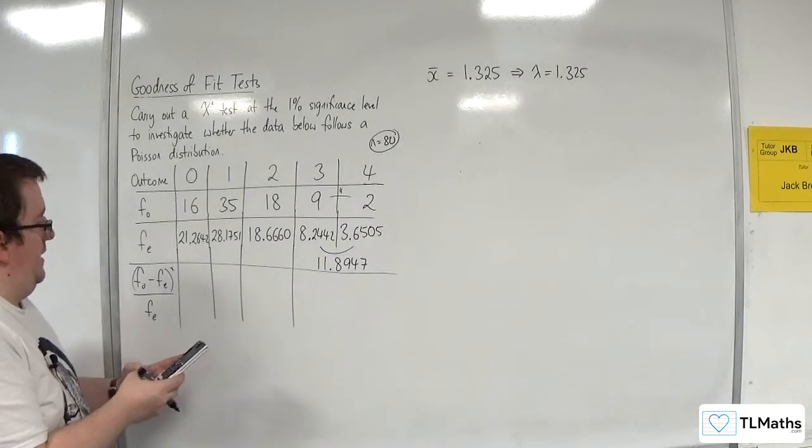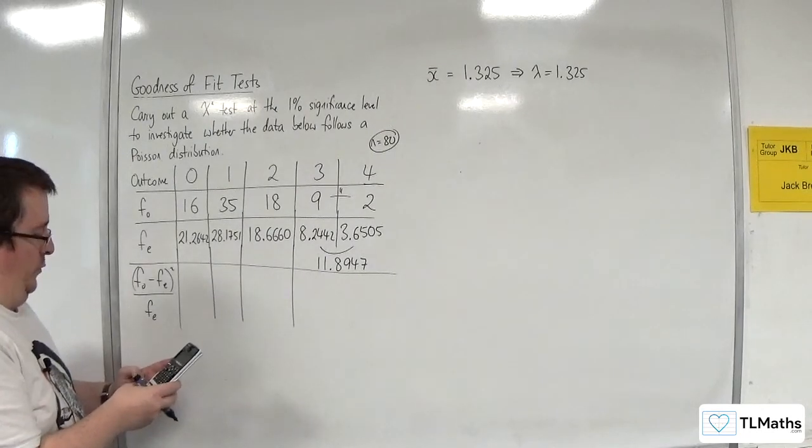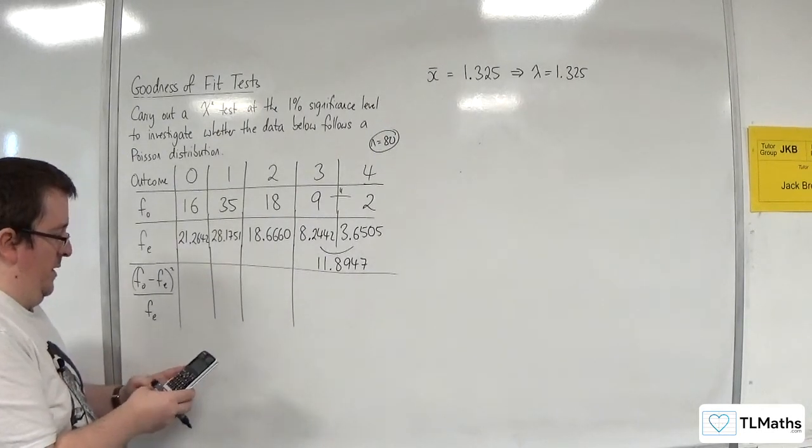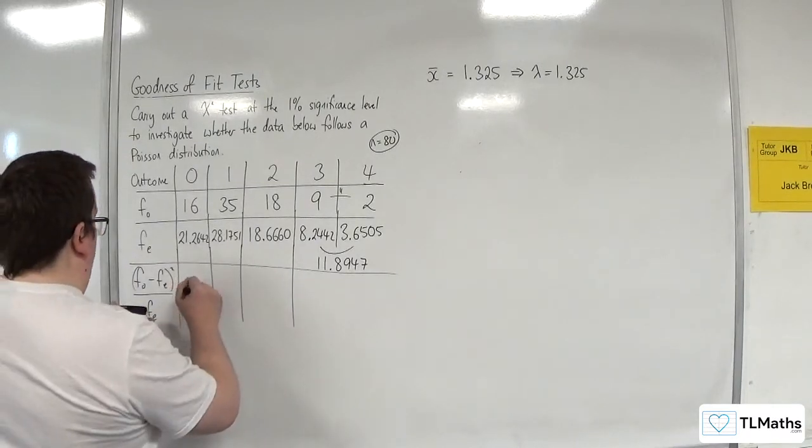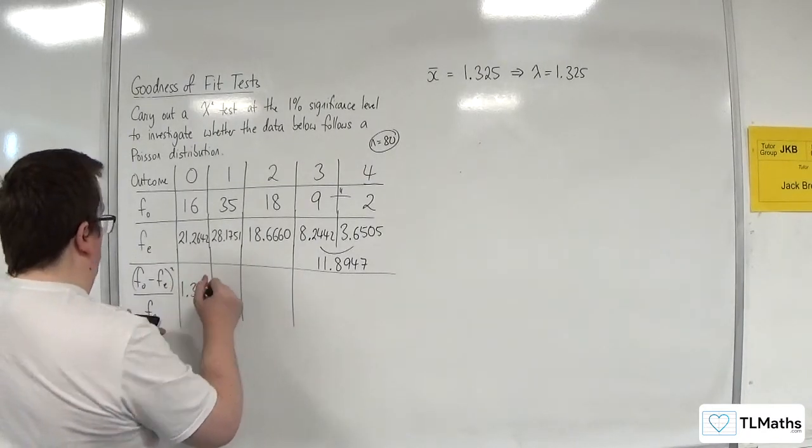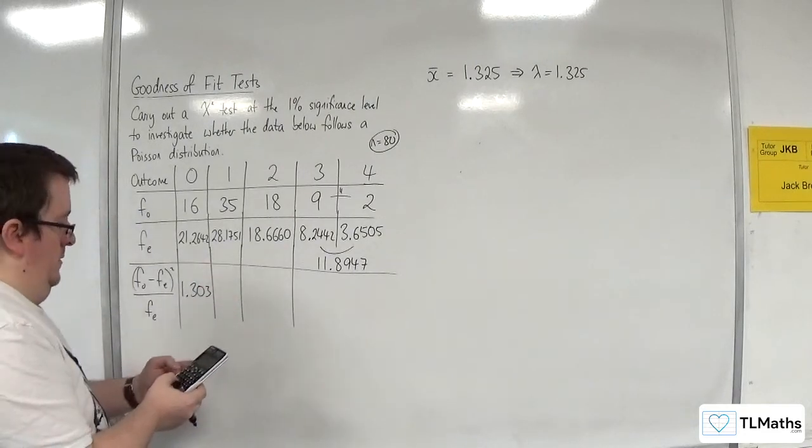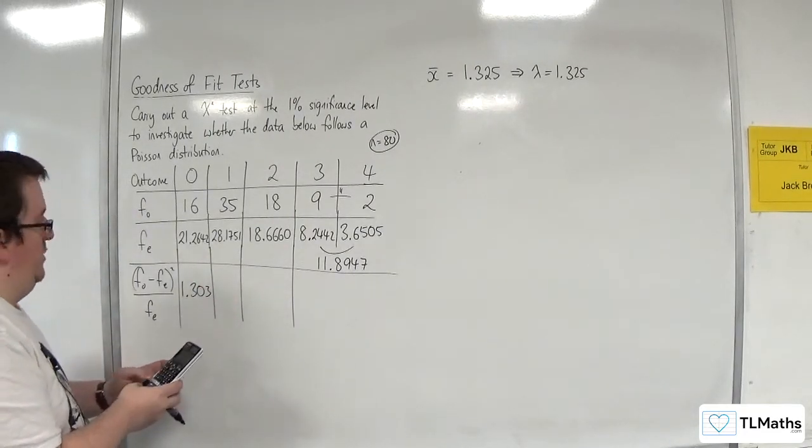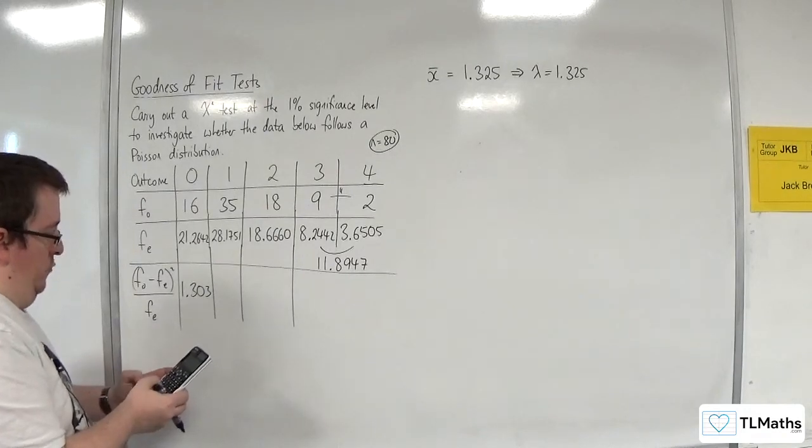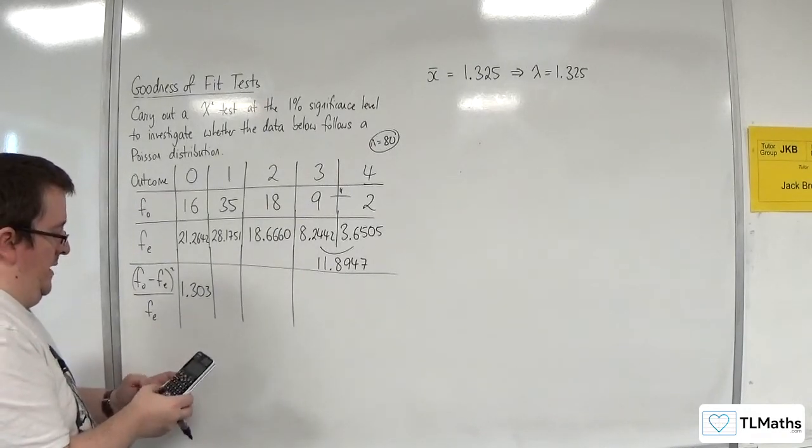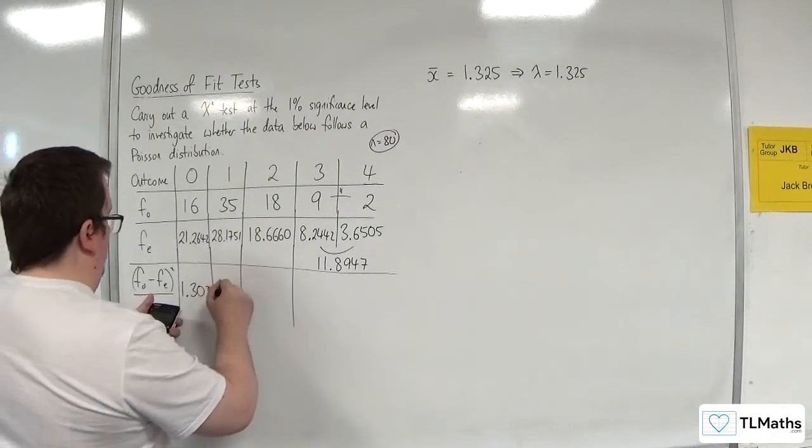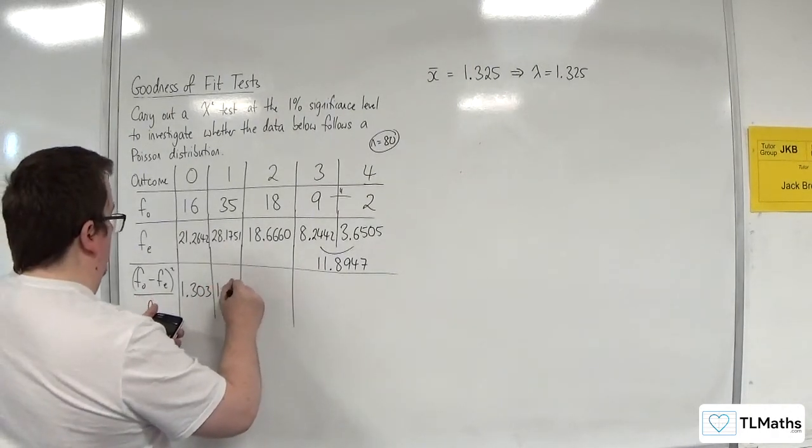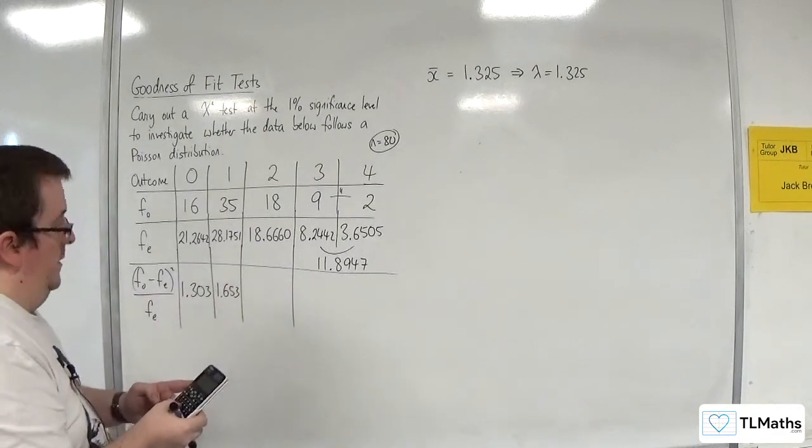We've got 16, take away 21.2642, squared, divided by 21.2642, and we get 1.303. Next one, 35 take away 28.1751, squared, divided by 28.1751. So 1.653.